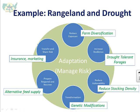Here's a simple example applying the principles of adaptation: rangeland and the possibility of drought. For outdoor range animals, we can reduce exposure through farm diversification — maybe not all animals on rangeland. Increasing resilience might mean drought-tolerant forages. Reducing vulnerability means reducing stocking density. Transformation could involve genetic modifications over time. Protecting against drought means alternative feed supplies, and for transfer and sharing risk, we can look at marketing opportunities and insurance.